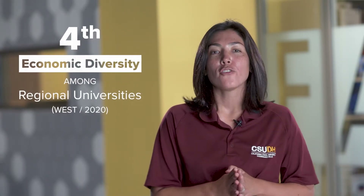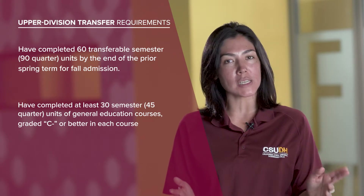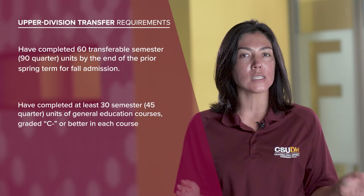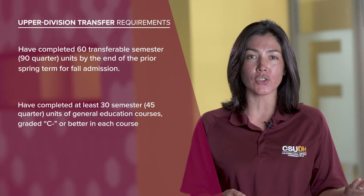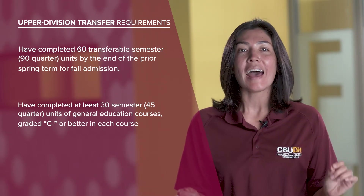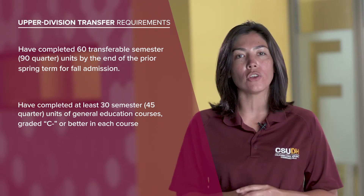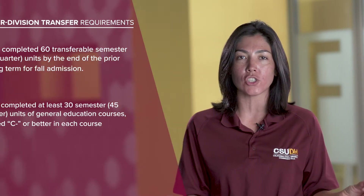Let's get right into the transfer requirements. As a transfer student coming from a community college or another university, you will need to complete 60 semester units or 90 quarter units prior to enrolling for the fall term. Of these, at least 30 semester units or 45 quarter units will need to be in general education courses.